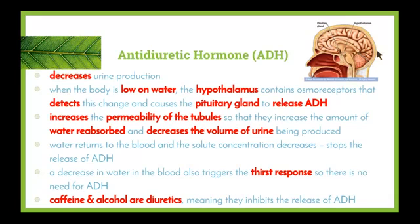A decrease in water in the blood also triggers the thirst response. Once we drink, there's no need for ADH to be released. Caffeine and alcohol are two substances that are diuretics — they inhibit the release of ADH. ADH stops us from going to the bathroom when we don't need to. Diuretics such as caffeine and alcohol increase the amount of urine we create, so we do urinate more when we drink them.